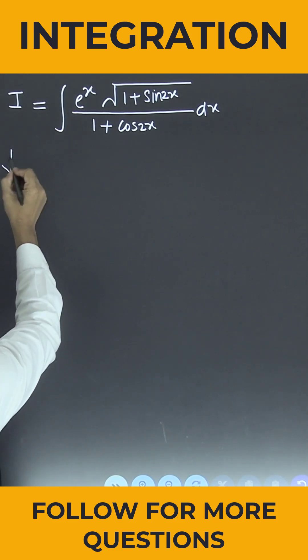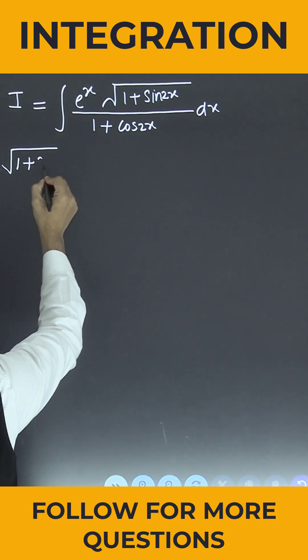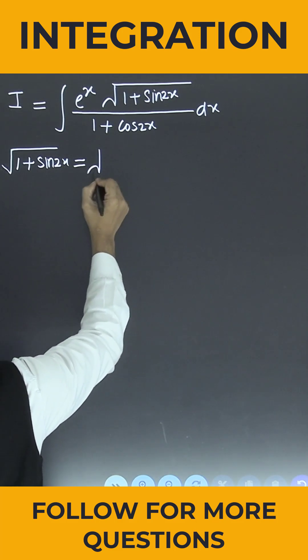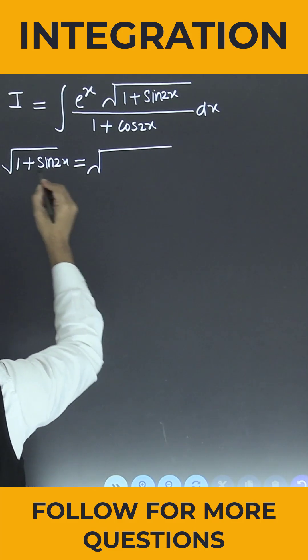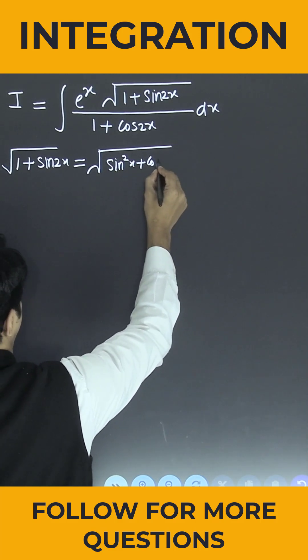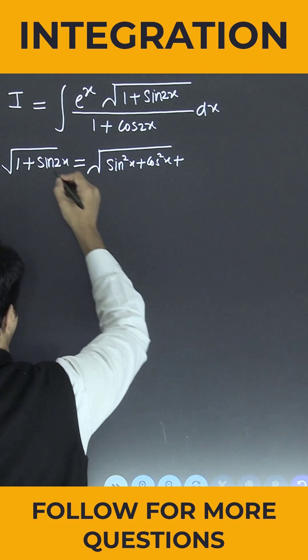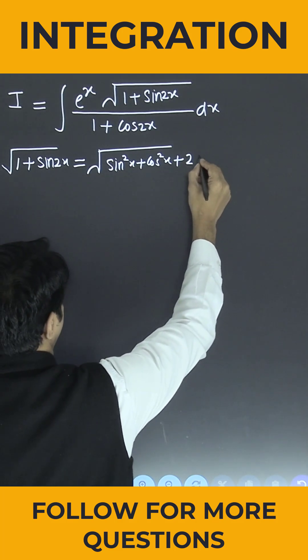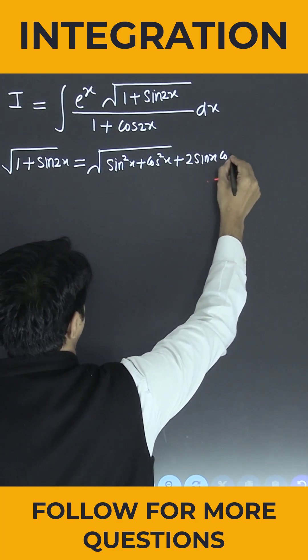So can I say the square root of 1 + sin 2x can be written as the square root of sin²x + cos²x plus sin 2x, which can be written as 2 sin x cos x.